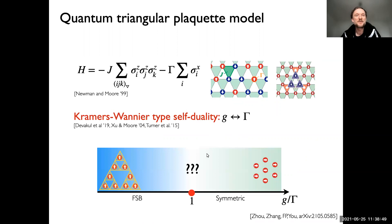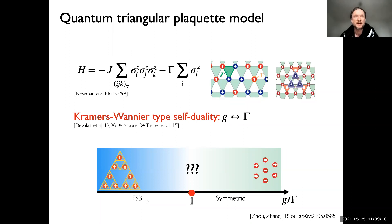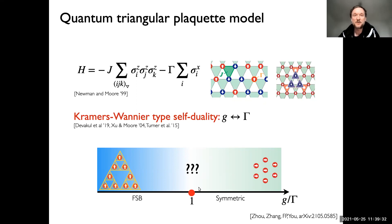So what have we learned so far? We have a model with a tuning parameter. When the transverse field gamma is zero, the ground state spontaneously breaks the sublattice symmetry — on a given Sierpinski gasket, all spins must point in the same direction. For large gamma, the ground state is a simple paramagnetic state. We know that if there is a critical point, it must be at gamma equal to one because of self-duality. This is exactly what we want to understand: what is happening as we tune through this phase diagram.